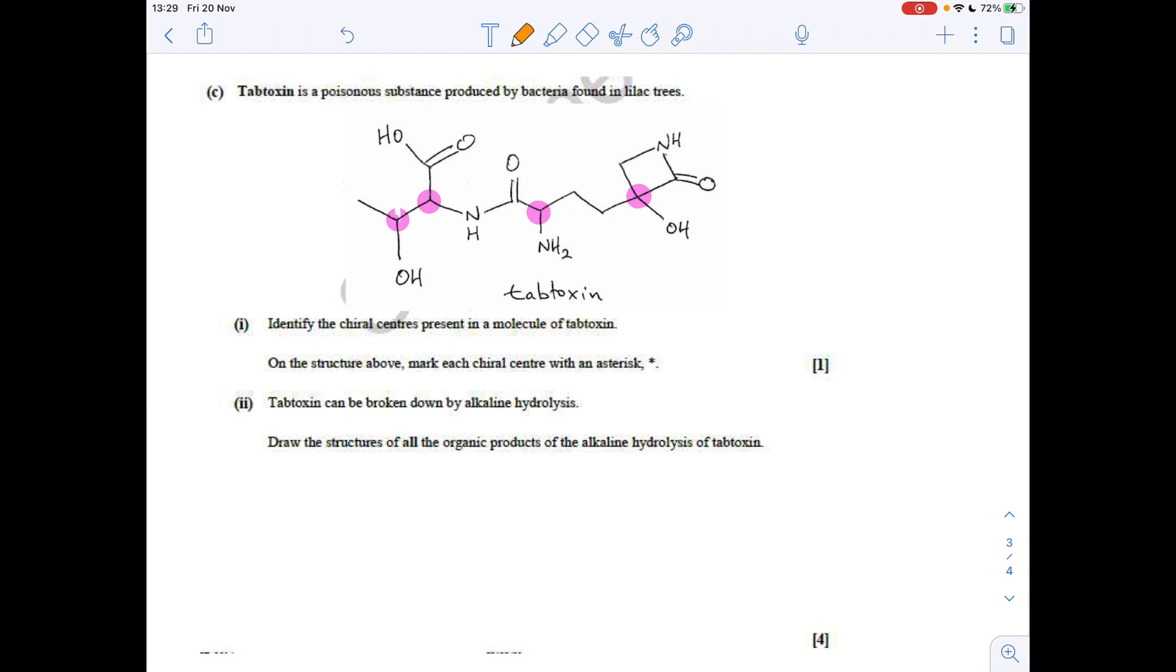Next part, it can be broken down by alkaline hydrolysis. Draw the structures of all the products of the alkaline hydrolysis. The first thing we'll do is look at which bonds can be broken under hydrolysis. It's ester bonds and amide bonds that can be broken. Well, we've got amide bonds in this molecule. There's one there. So that's going to break, and also that one there.